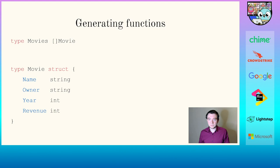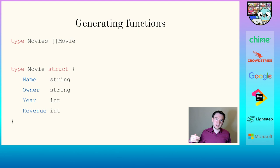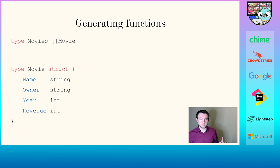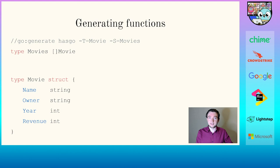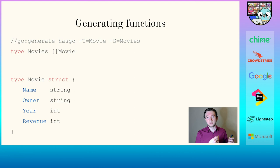Let's take this idea and apply it to a new type of struct — something that is not one of the base types defined by Go, no strings or integers. I defined something called a movie and a type called movies, which is a slice of movie. In our movie type, we have a name string, an owner, a year, and a certain amount of revenue. To go from this struct definition to all the functions Hasgo can do on them, we add a special comment that tells the Go generate tool to generate using the Hasgo program, requiring the type movie and slice type movies.